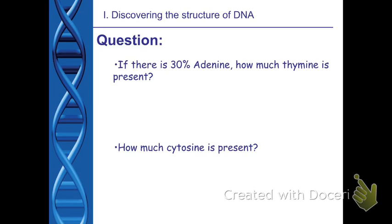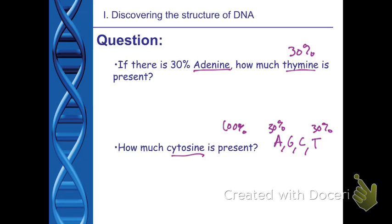Here's an example: if 30% of the DNA is adenine, how much thymine is there? Since A pairs with T, thymine must also be 30%. Then, since all four bases must add up to 100%, A and T together take up 60%, leaving 40% for G and C combined. Since G pairs with C equally, G must be 20% and C must be 20%. So cytosine is present at 20%.